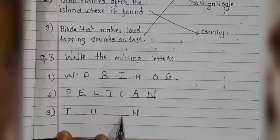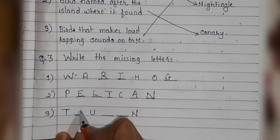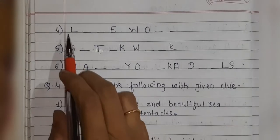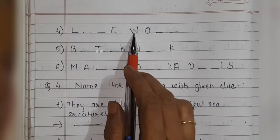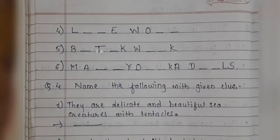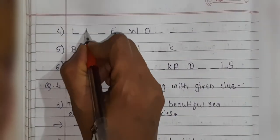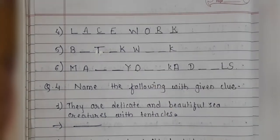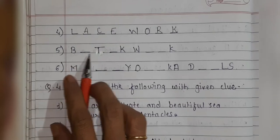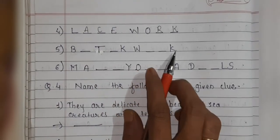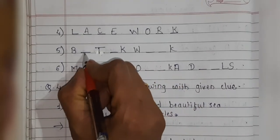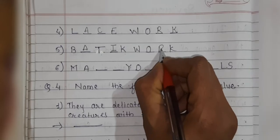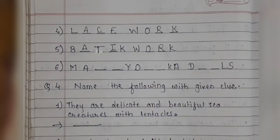Next: P-dash-U-dash-dash-N — it is toucan. P-O-U-C-A-N. Next: L-dash-dash-E-W-O-dash-dash — it is lacework. L-A-C-E-W-O-R-K. Fifth one: B-A-T-I-K-W-O-R-K — it is batik work. B-A-T-I-K-W-O-R-K. Batik work.